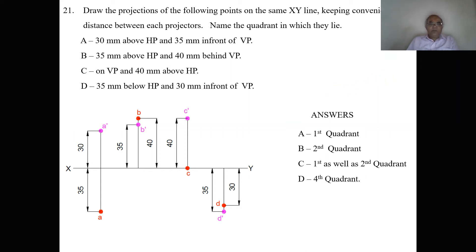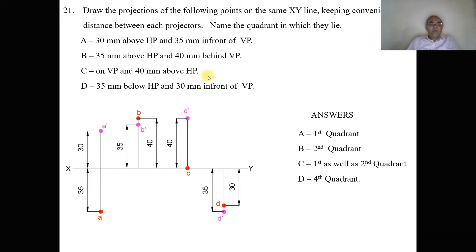Continuing from the combination of quadrants, we're going to solve another problem. Draw the projections of the following points on the same XY line, keeping convenient distance between each projector, and name the quadrants in which they lie. Point A: 30 mm above HP and 35 mm in front of VP. Point B: 35 mm above HP and 40 mm behind VP. Point C: on VP and 40 mm above HP. Point D: 35 mm below HP and 30 mm in front of VP.